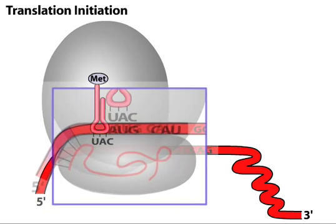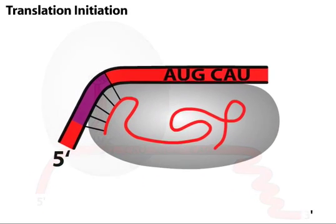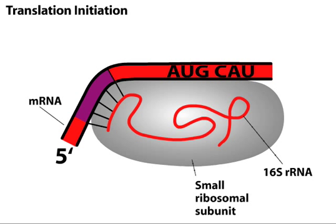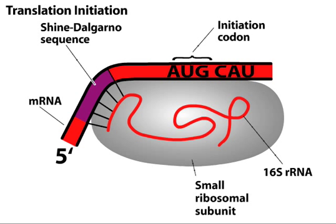In prokaryotes, the ribosome is correctly positioned at the initiation codon by two RNA elements. Just upstream of the initiation codon is the Shine-Dalgarno sequence, which pairs with the 3' end of 16S ribosomal RNA.